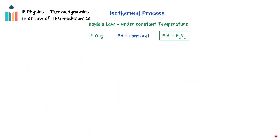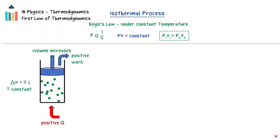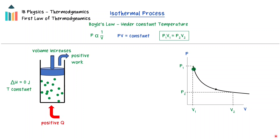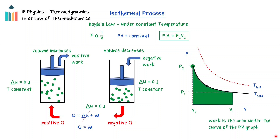Boyle's law states that under constant temperature, the pressure of a fixed mass of an ideal gas is inversely proportional to its volume. When thermal energy enters the ideal gas, the volume expands and work is done by the gas on the surroundings. Because the process is isothermal, the internal energy and temperature remain constant. On the pressure-volume graph, an isothermal process results in curved lines known as isotherms. At higher temperatures, these isotherms have smaller curvature and are located above and to the right of cooler isotherms. Because there is no change in internal energy, the thermal energy entering or leaving equals the work done.